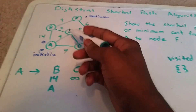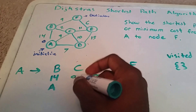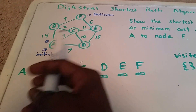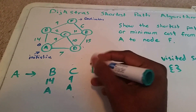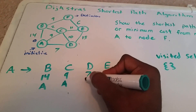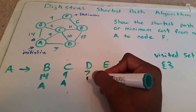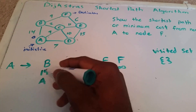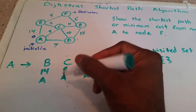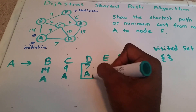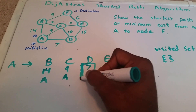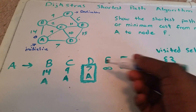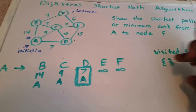The cost to get from A to C is zero plus nine. Nine is an improvement over infinity, so we put nine here — it comes from node A. The cost to get to D is zero plus seven, and seven is an improvement over infinity, so we put seven here, coming from node A. We look at the smallest tentative value, which is seven, and we're going to visit that node. Now we're done visiting A, so we put A in the visited set.